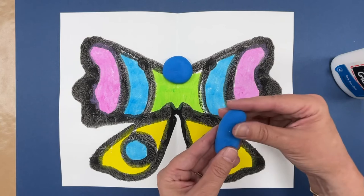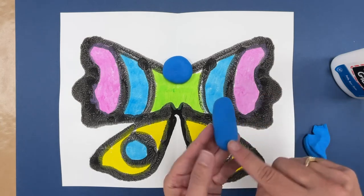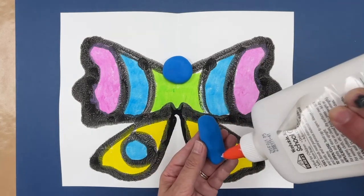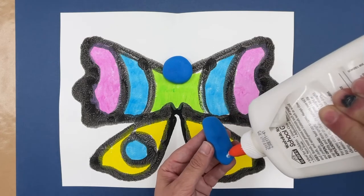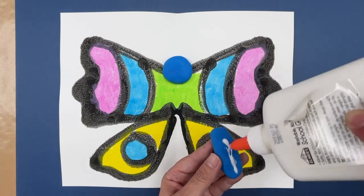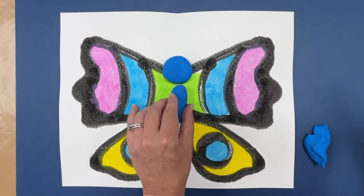It's kind of like a long oval shape and I'm going to put some glue on the back and glue it on there.